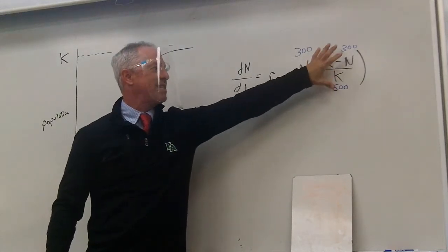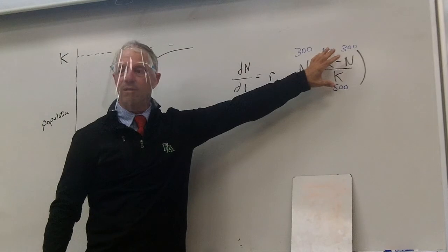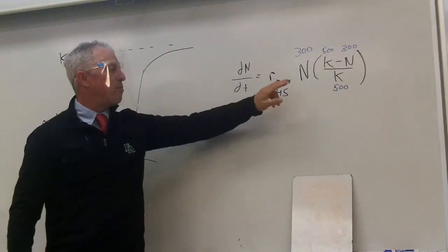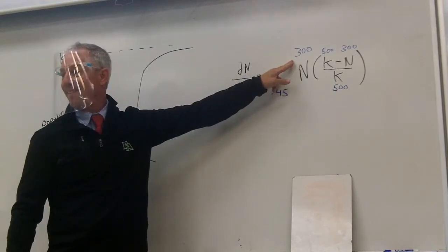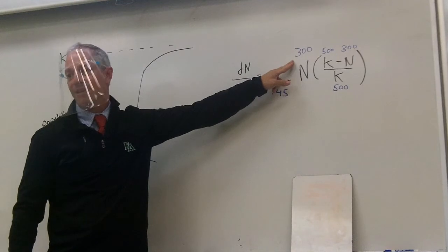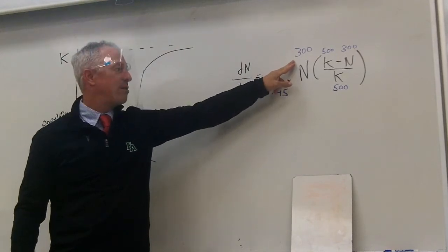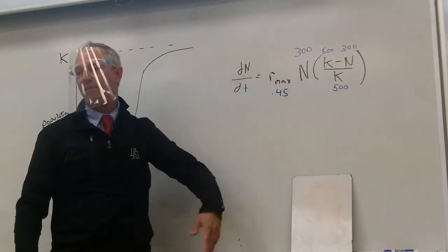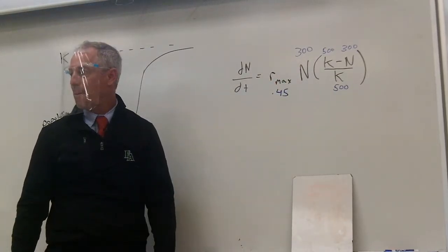So this entire thing is 0.4. So 0.4 times 300, 120. How did I get that so fast? 4 times 3 is 12. 0.4 times 300, 120. See how the mind works?